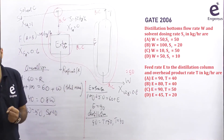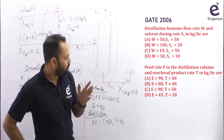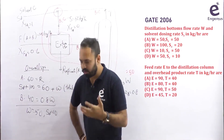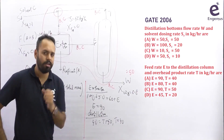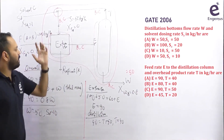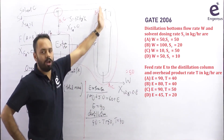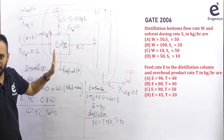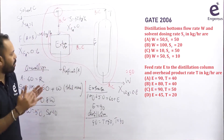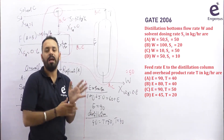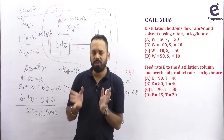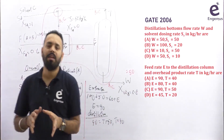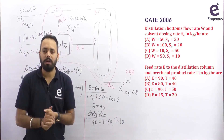That is the beauty of degree of freedom analysis. This question has made the degree of freedom concept even clearer. This was one more problem for a multiple unit system. In this system there is a stream leaving the distillation column and coming back — this is called a recycle stream. In the upcoming lecture I am going to discuss recycle and bypassing in multiple unit systems.